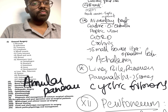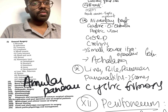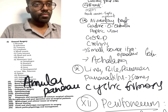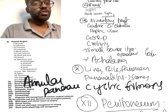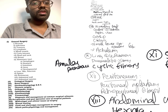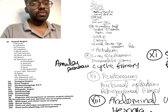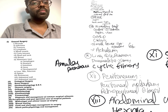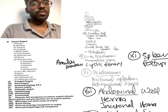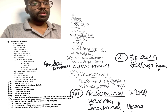From liver, bile, and pancreas — the tenth topic — they asked about pancreatitis and its complications. They also tried to connect these topics with cystic fibrosis. Annular pancreas was asked this year, while last year they asked about ectopic pancreas. Be ready for questions from this chapter as well.